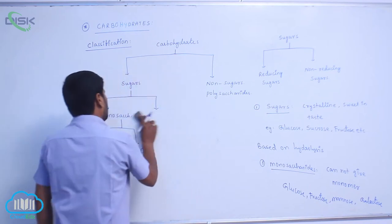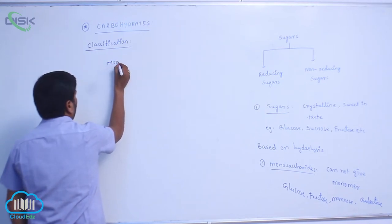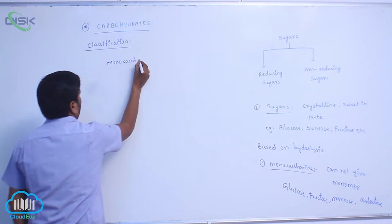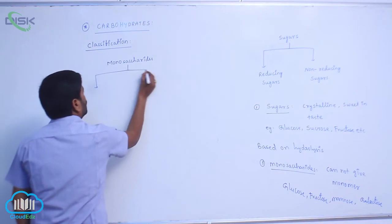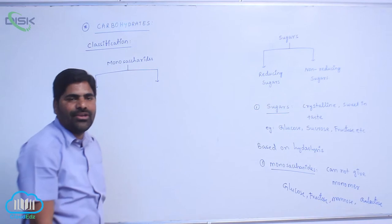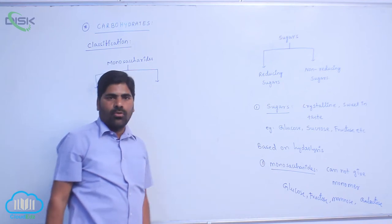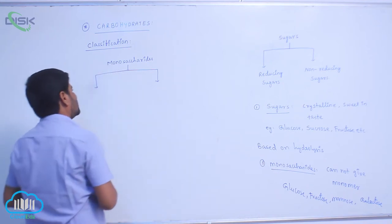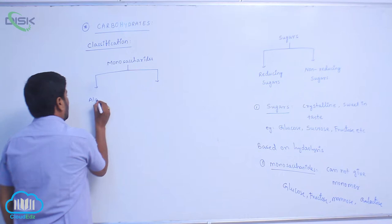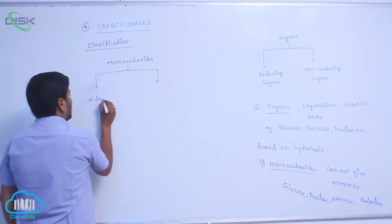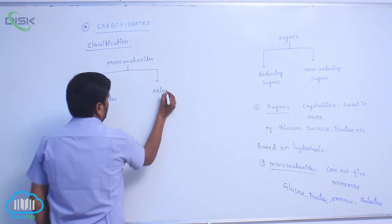Based on functional group, the monosaccharides are classified into two types: one is aldoses, which contain an aldehyde functional group, and the second one is ketoses, which contain a keto group.